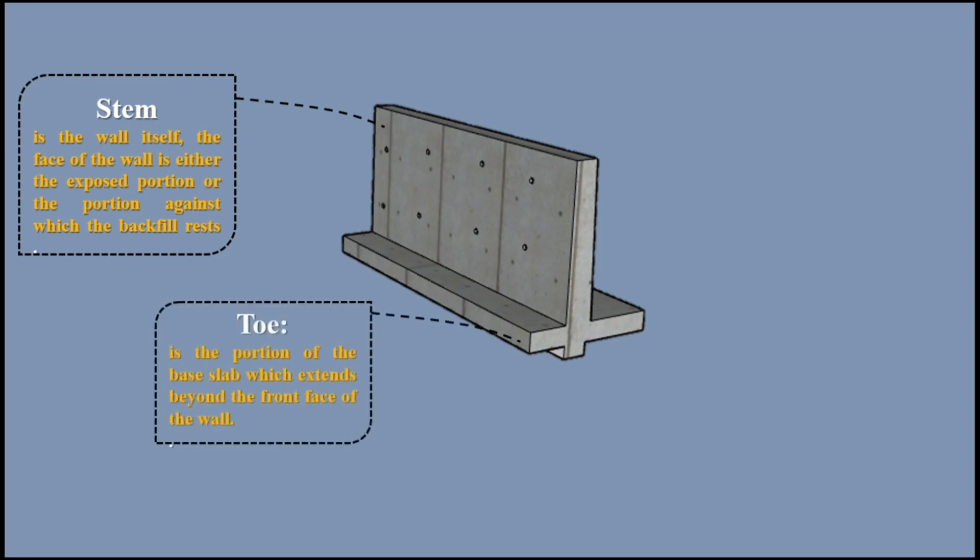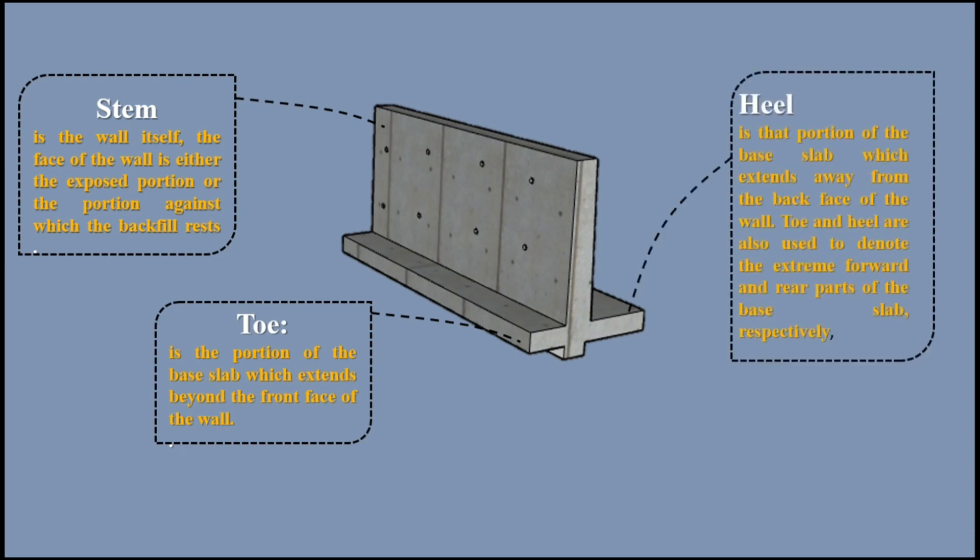Toe: The toe is the portion of the base slab which extends beyond the front face of the wall. Heel: The heel is that portion of the base slab which extends away from the back face of the wall. Toe and heel are also used to denote the extreme forward and rear parts of the base slab, respectively.